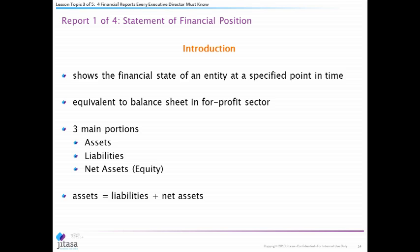Let's go through each one. The statement of financial position is a snapshot — if I run it on June 15th it will look different than if I run it on June 20th, so it's a specific point in time. There are three main portions: assets, liabilities, and net assets — which in the for-profit world is called equity. The reason it's called a balance sheet is because it has to balance: assets must equal liabilities plus net assets.